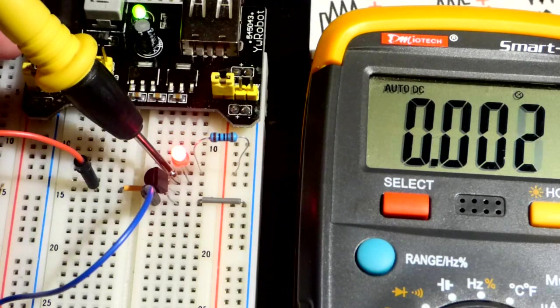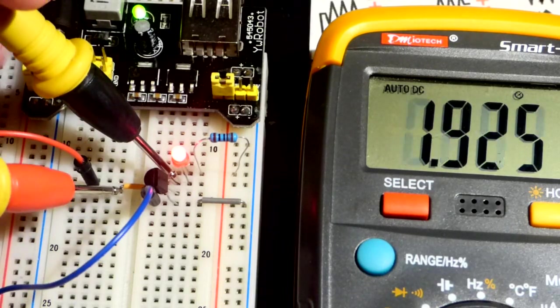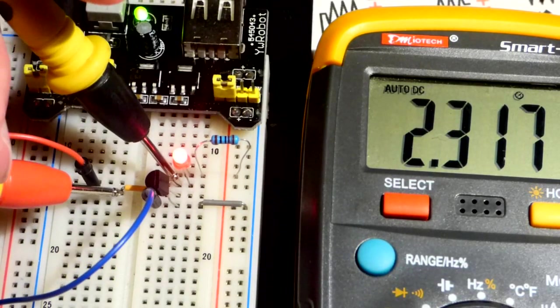And then put the red one to the gate there. And there you can see, we have 2.3 volts more positive.